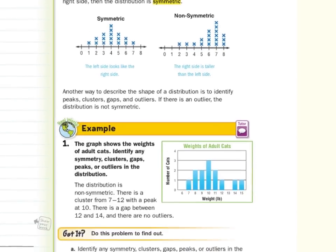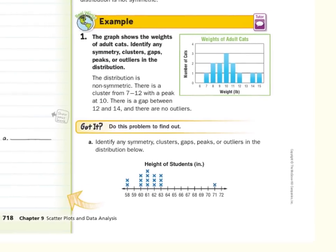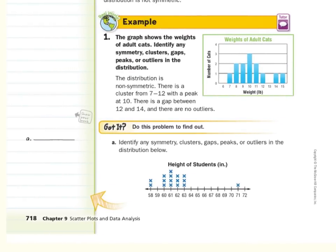So as we move to our guided example one, the graph shows the weights of adult cats. Identify any symmetry, clusters, gaps, peaks, or outliers in the distribution. Well, first off, to describe any symmetry, the left side is not the same as the right side, and so this is going to be described as being non-symmetric. There is a cluster from 7 to 12, right here, with the peak, the high point, at 10. Again, there is a gap between 12 and 14, and there are no outliers.